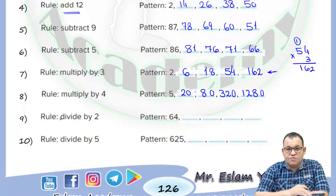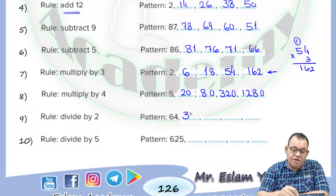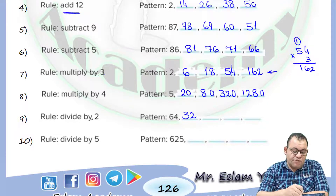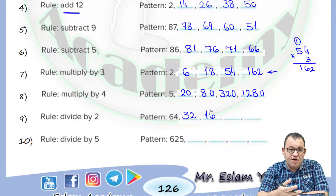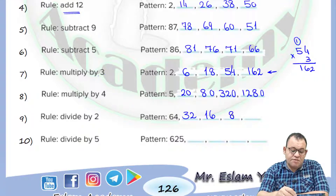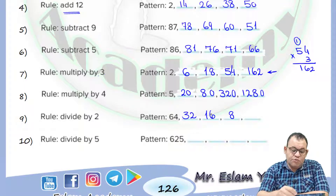Now we need to divide by 2. 64 divided by 2 — the answer will be equal to 32, because starting from the left: 6 divided by 2 equals 3, and 4 divided by 2 equals 2. Again, 32 divided by 2 the answer will be equal to 16. If you can't divide this way you can use long division. 16 divided by 2: the number you multiply by 2 to equal 16 is 8. 8 divided by 2 equals 4.